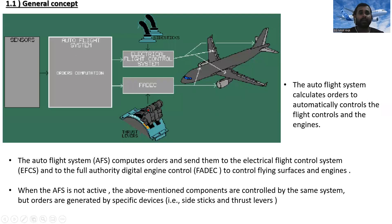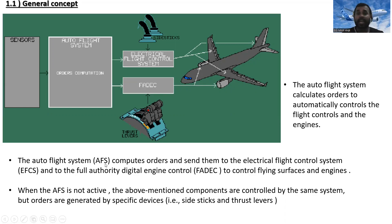Looking at the general concept: the auto flight system receives inputs from sensors and sends computation outputs to the electrical flight control system — including electrical elevators, ailerons, and spoilers — and also to the FADEC, which goes to the engines. The auto flight system computes orders and sends them to the electrical flight control system and to the full authority digital engine control, FADEC, to control flying surfaces and engines.